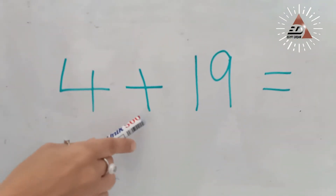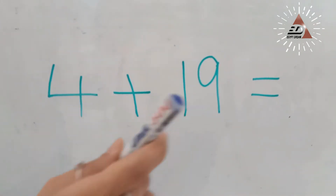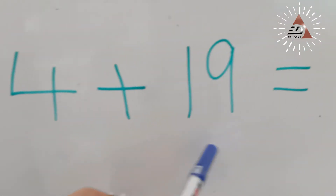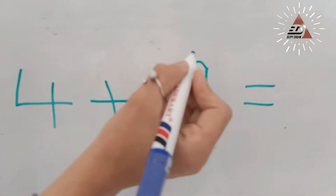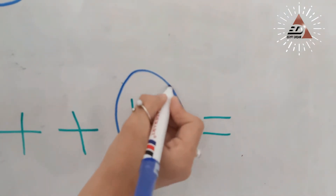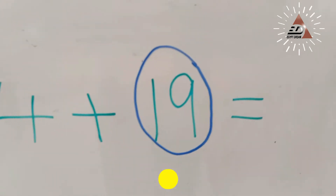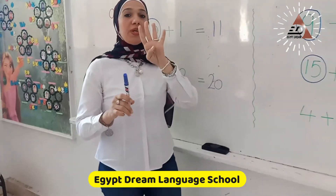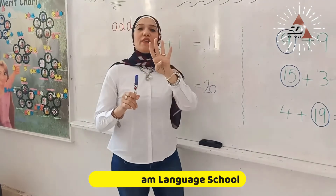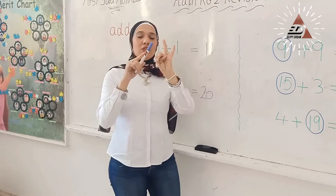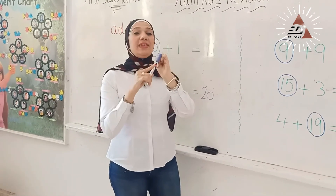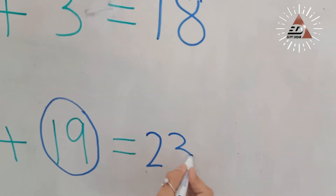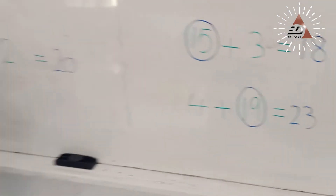4 plus 19. Which one is the bigger number, KG2? 4 or 19? Yes, 19 is the bigger. Now, put 4 on your hand. Count after 19: 20, 21, 22, 23. Write number 23.